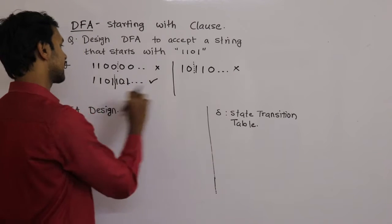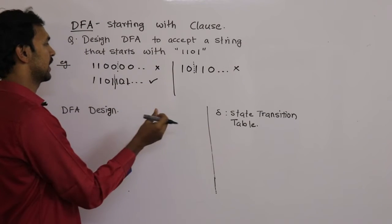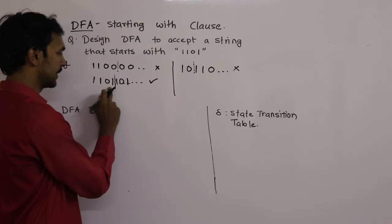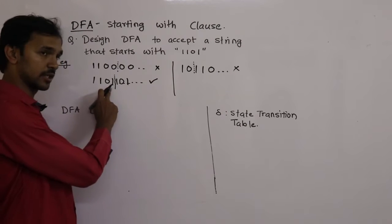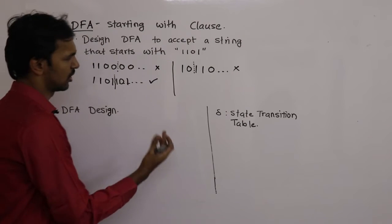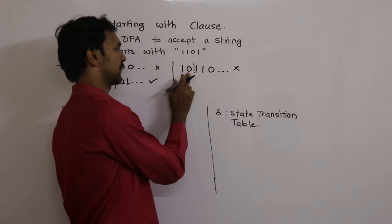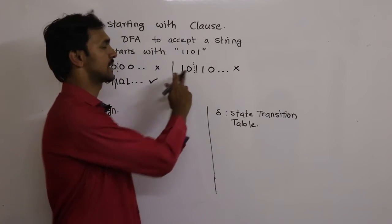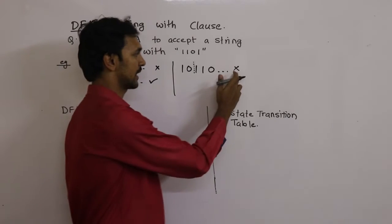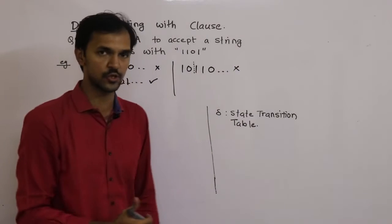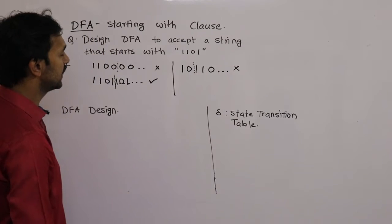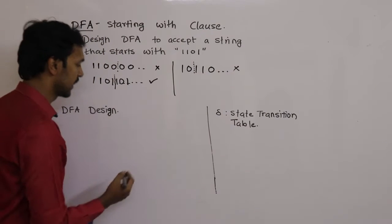From these three examples, you can understand: the machine checks all the bits — if all are correct it accepts. In the second case, the machine checks only 2 bits; as the 2nd bit is wrong, it does not accept the string. Now let's try and design a DFA for the same.